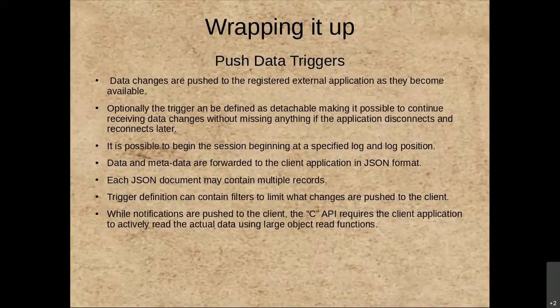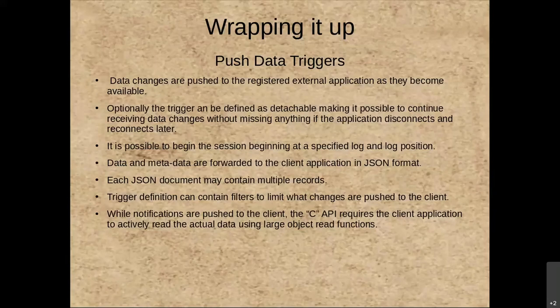Push Data Triggers capture data changes from the registered external application as they become available. Optionally the trigger can be detachable so you can restart it, and you can reposition within the log. Data is forwarded to the application in JSON format, and each JSON document may contain multiple records. The trigger definition allows you to filter data as it's pushed to the client. There is a separate Java and C API for these which are slightly different.